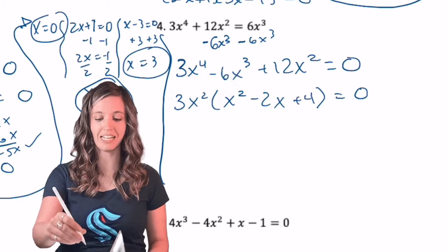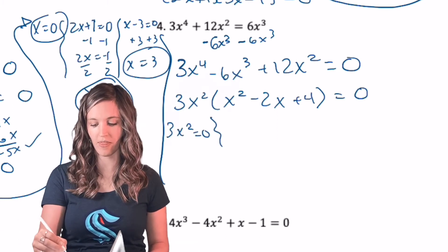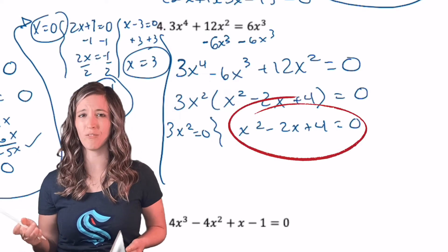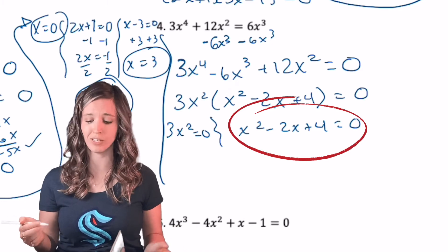Let's set it up with zero product property real quick. Three X squared equals zero, and then my quadratic equal to zero. How could I solve this? Well, technically I could use a quadratic formula, but hey, A equals one, so I could totally complete the square.